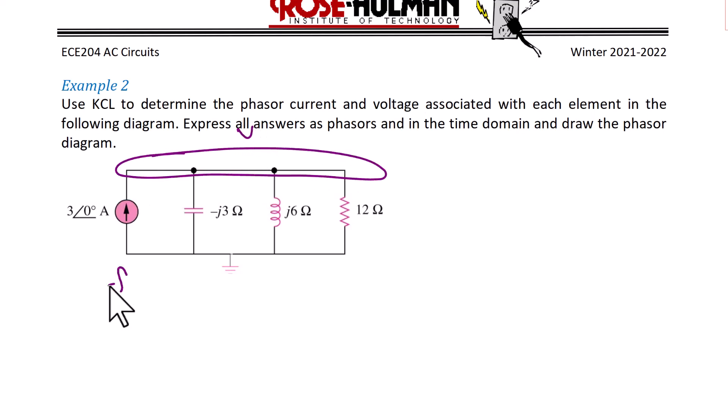So we'll circle this top node and label it V. The bottom node is already labeled ground, and it's already in the frequency domain, so we don't need to do any conversions. We just need to apply KCL and solve.